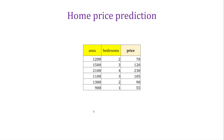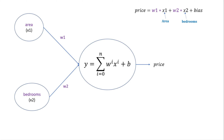We just have theory today, no Python coding. I'll use a home price prediction example because it's the simplest, but chain rule applies to all kinds of deep learning problems. The neural network for home prices has area and bedrooms as inputs, and the formula is: price = w1 × area + w2 × bedrooms + bias. This formula was covered in my linear regression tutorials.